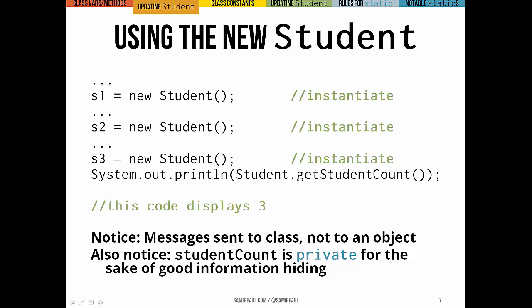Make sure you notice: class methods are called by using the class name — in this case Student — not any particular object or instance of the class. You should also note that we don't try to manipulate the studentCount variable directly, because we want to hide that information and control how studentCount gets modified. It only happens in the constructor, and we can only access it through the getter we wrote. In general, use a static variable when all instances share one common data value, and use static methods to provide access to that information, like static getters.